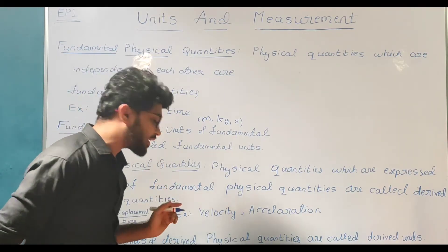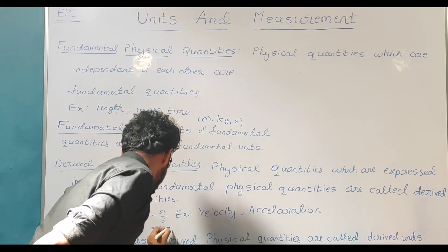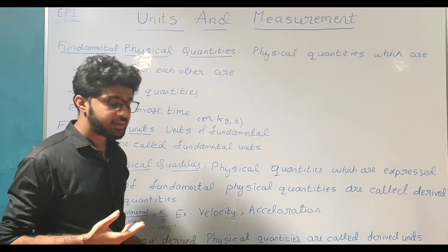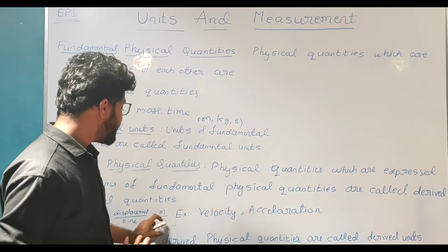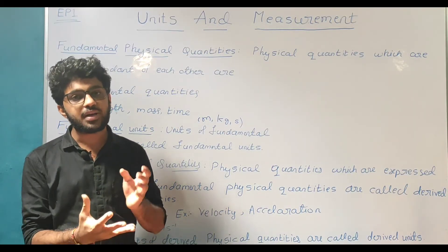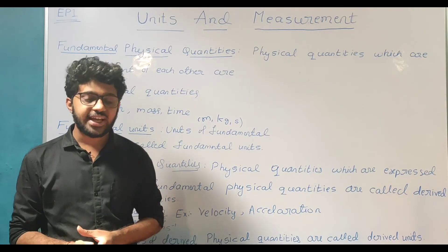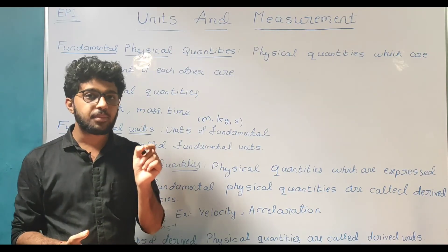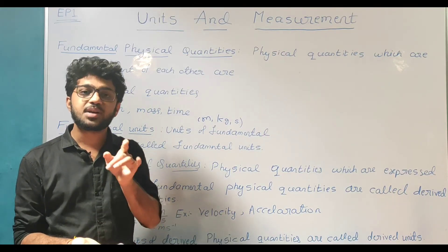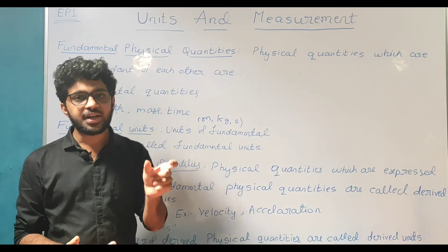For example, velocity has the unit meter per second (m s⁻¹), which is derived from the fundamental units meter and second. Acceleration has the unit meter per second squared (m s⁻²). Force is calculated using F = m × a, so the unit of force is kg × m per second squared (kg m s⁻²). These are examples of derived units.